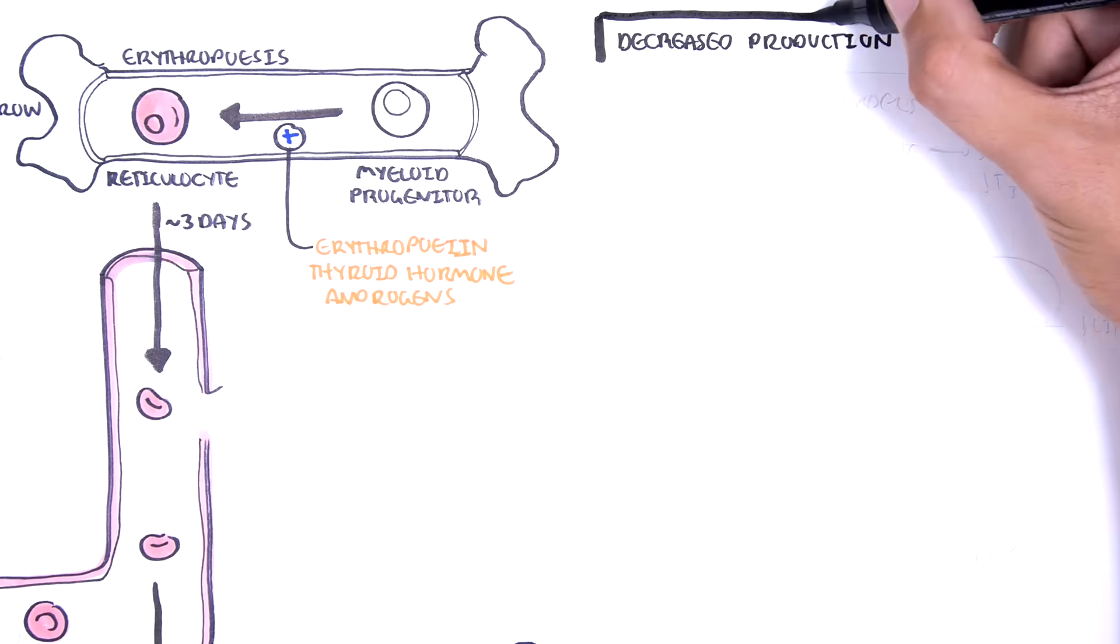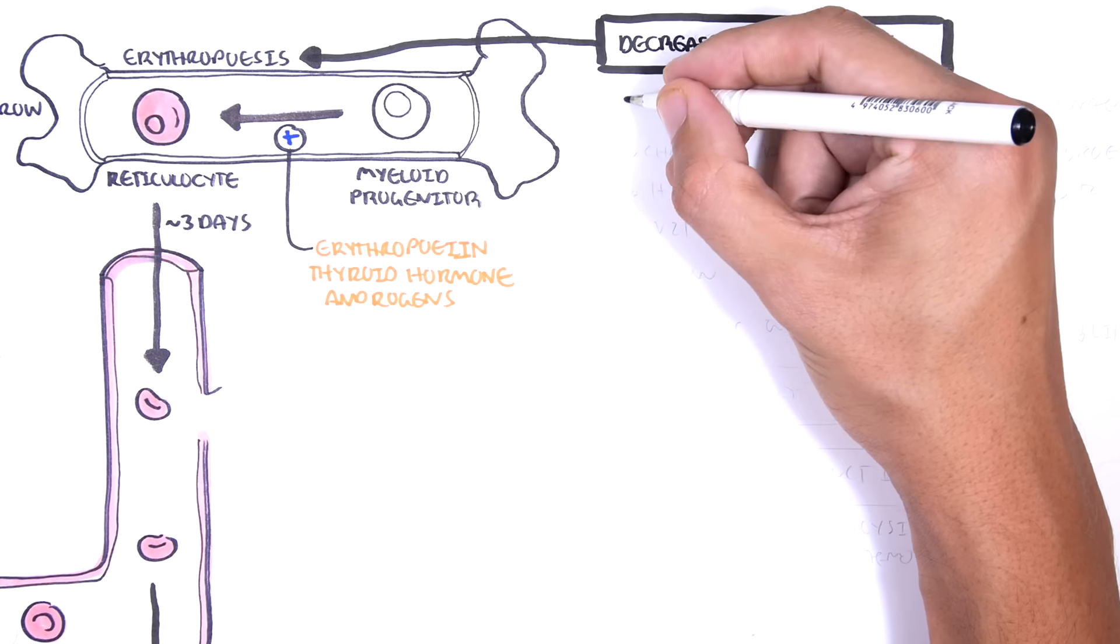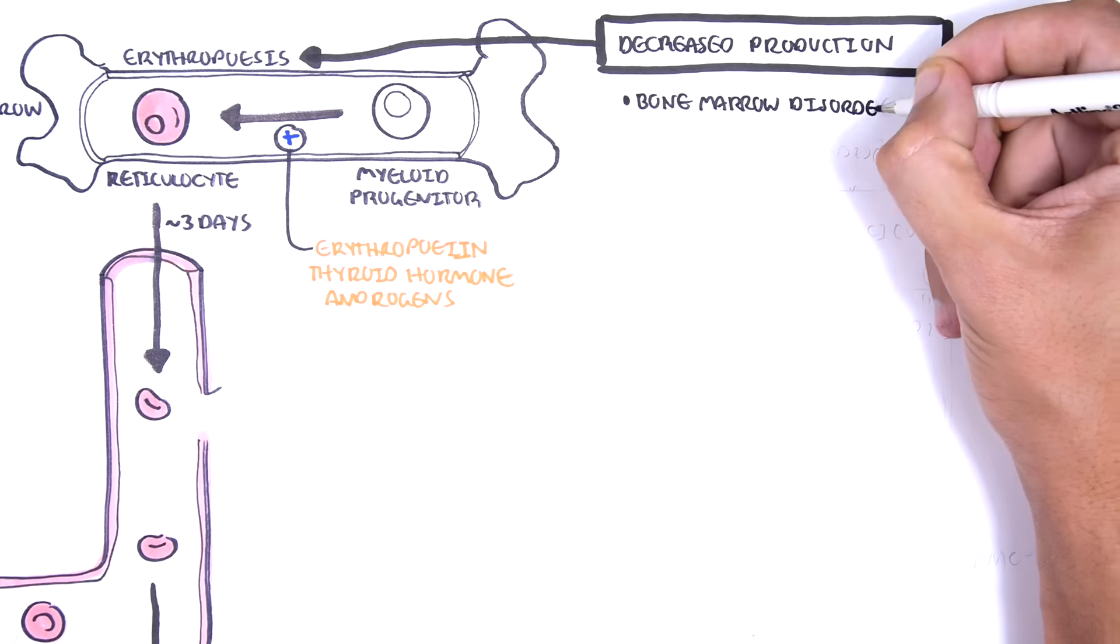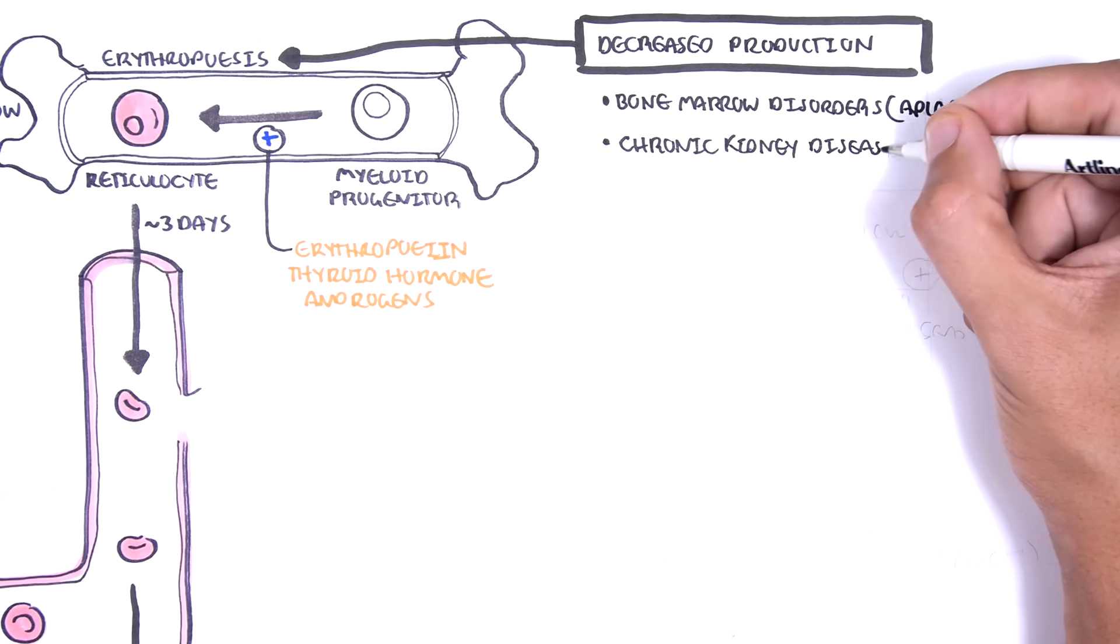A cause of anemia can be from decreased production, so reduced erythropoiesis. Examples include bone marrow disorders such as aplastic anemia, because remember red blood cells are formed from the bone marrow.